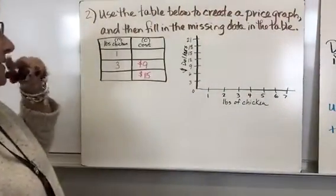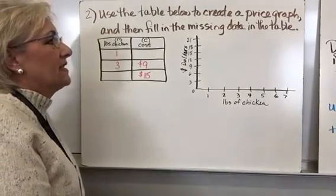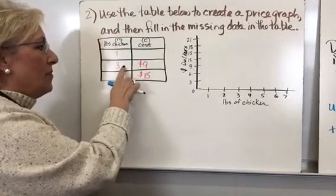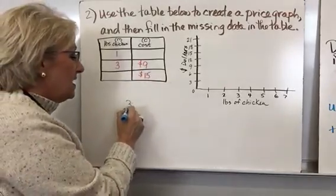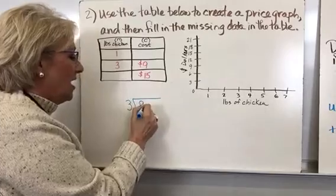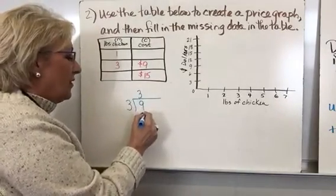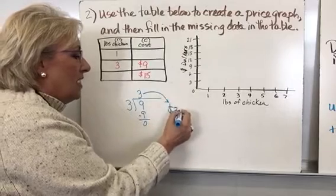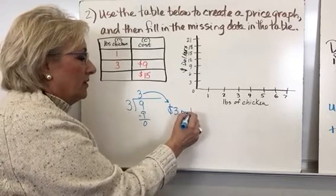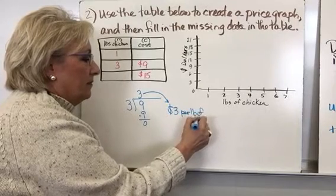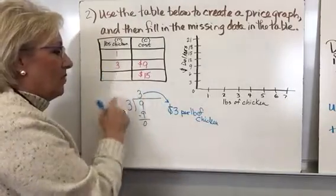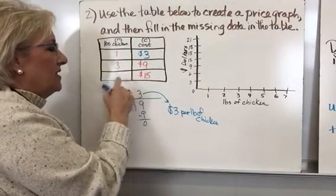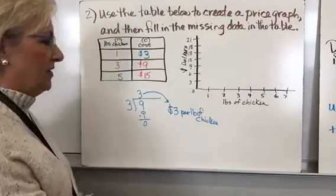Now we're going to use a graph. It says use the table below to create the price graph and then fill in the missing data. I don't know what one pound of chicken costs, but I do know that three pounds of chicken cost $9. So let's divide: three goes into nine three times evenly. So the cost per pound for chicken is $3 per pound. I can fill out the table: three times one pound is $3, and three goes into 15 five times, so this had to be five pounds of chicken to spend $15.